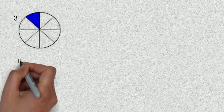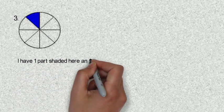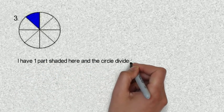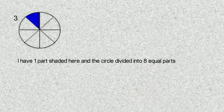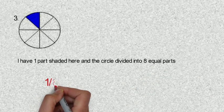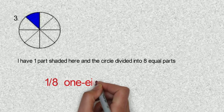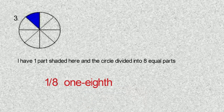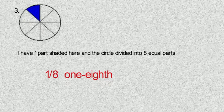Example three. I have one part shaded here and the circle is divided into eight equal parts. So I have this to be one over eight, which is also one eighth. Now that you can identify and name fractions, let's move to reducing fractions into smallest terms.